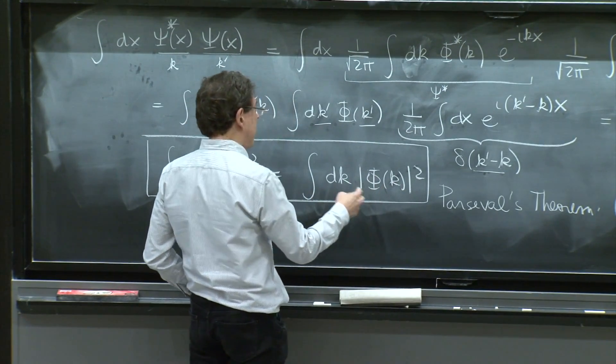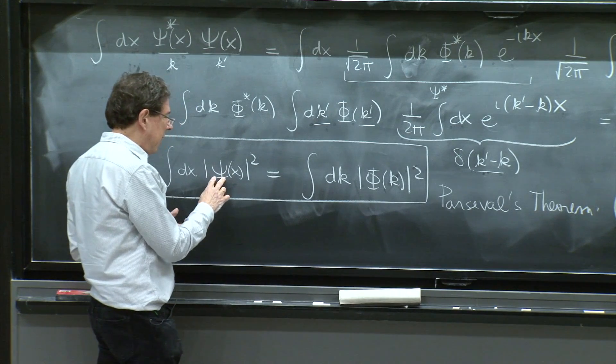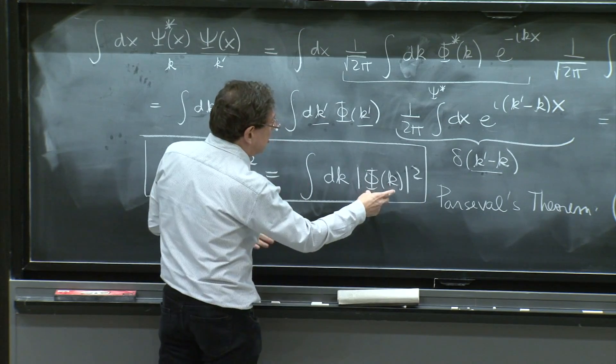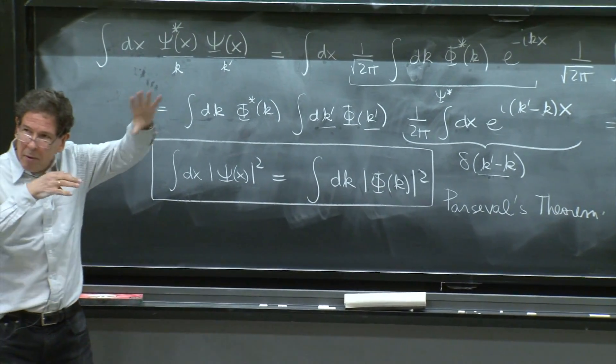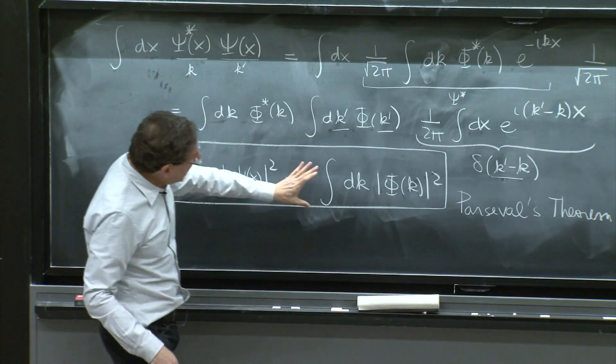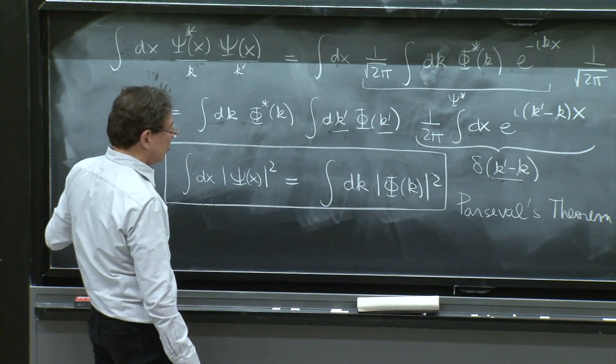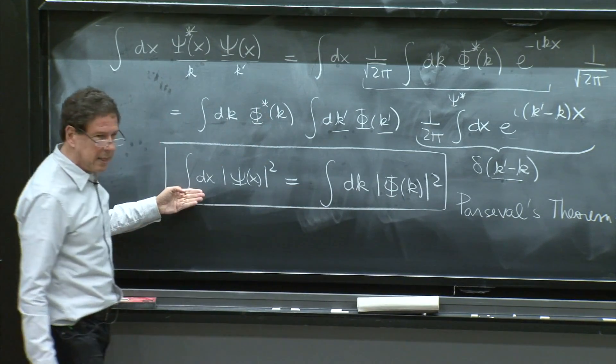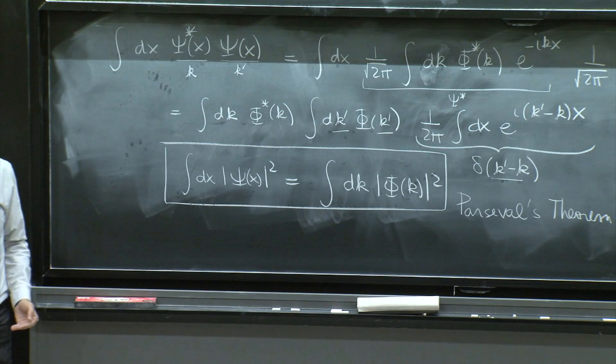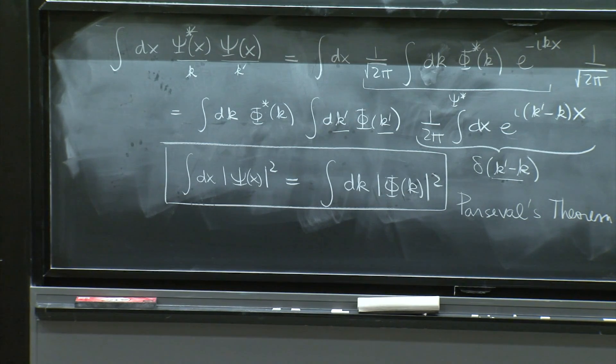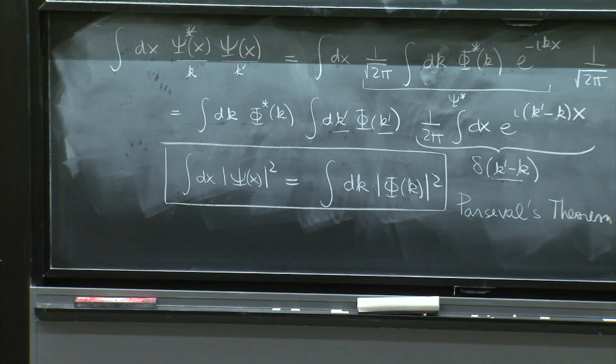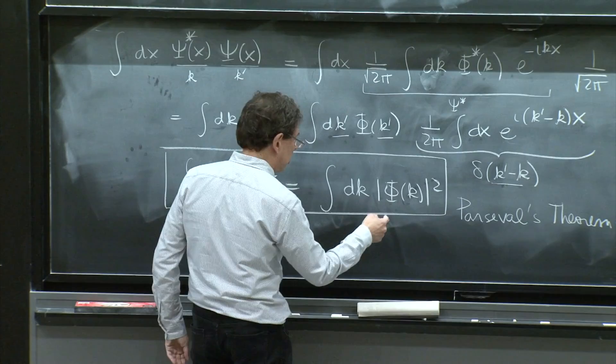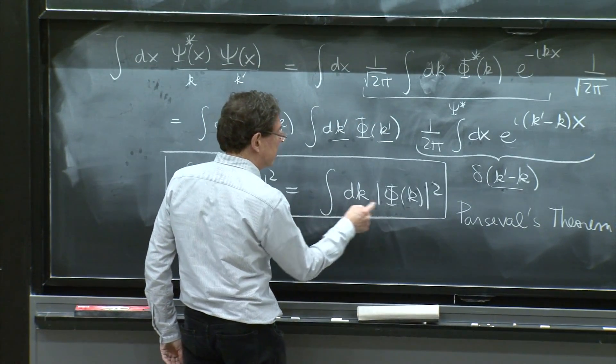And now we have a very similar relation for phi of k. Not only phi of k represents as much physics as psi of x, but it not only represents the weight with which you superimpose plane waves, but now it also satisfies a normalization condition that says that the integral is also equal to this integral, which is equal to 1. So it's starting to lead to the idea that this phi of k could be thought maybe as a probability distribution in this new space, in momentum space.